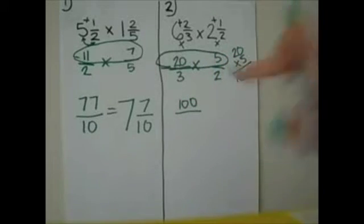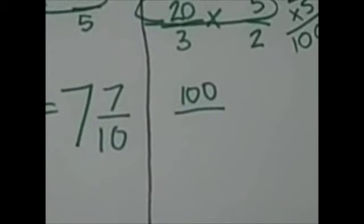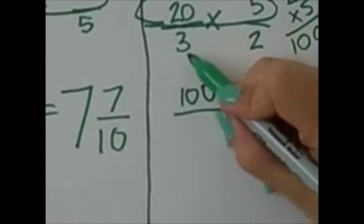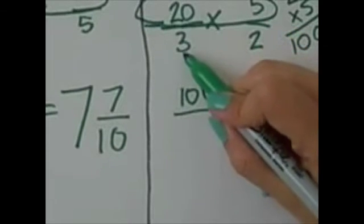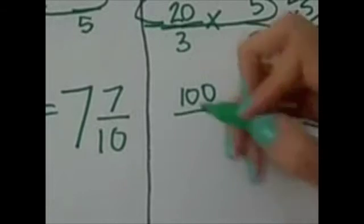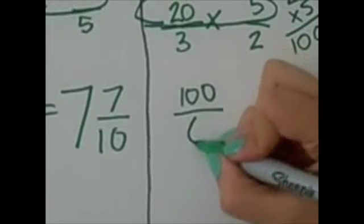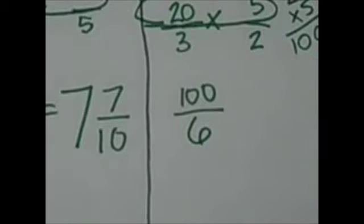So that's your new numerator. Let's zoom in, and we want to multiply 3 times 2 is 6, and that's going to be our new denominator.